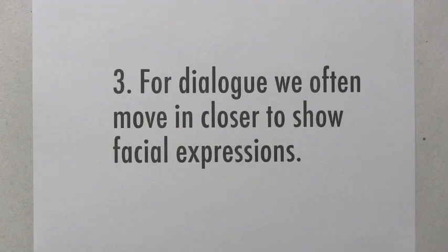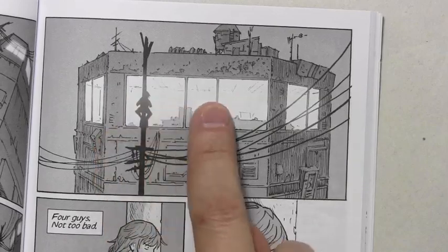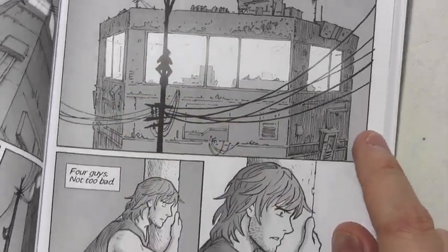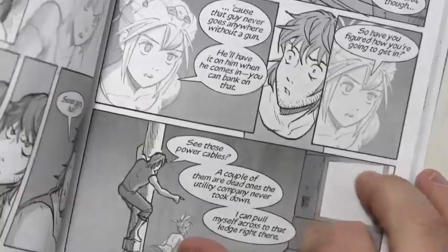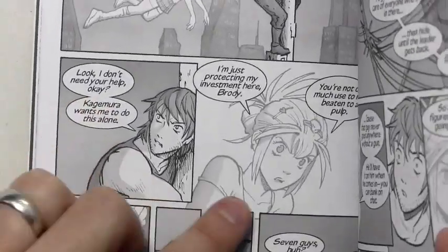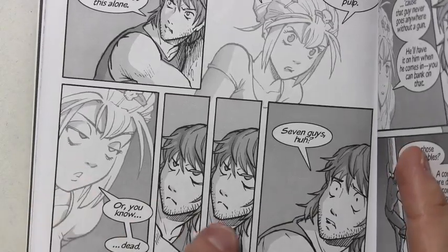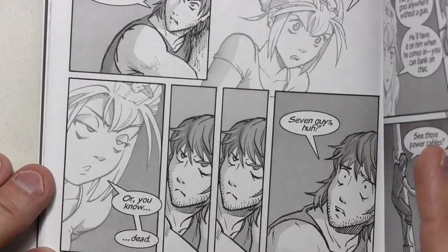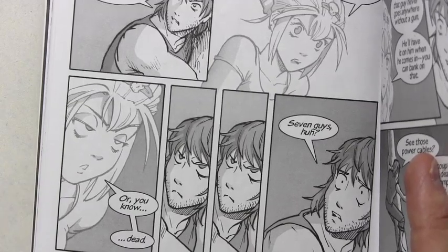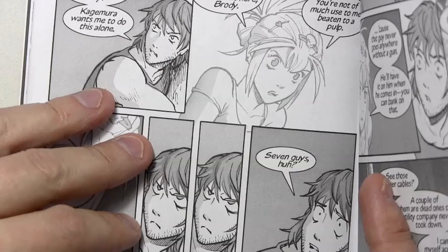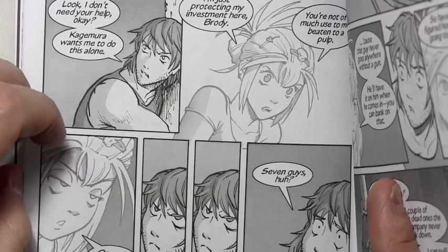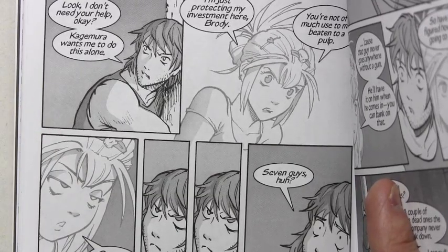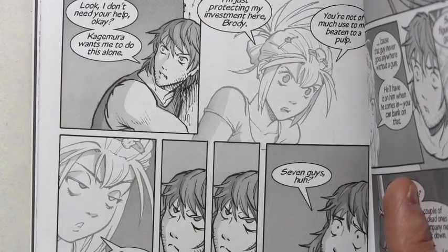Number three: for dialogue, we often move in closer to show facial expressions. Here Brody has climbed up a utility pole, peeking through a window. We begin to move in a little closer so we can see his facial expressions. As we get deep into the dialogue, it is primarily close-up scenes, fairly tight in, so that we can see the facial expressions and the changes that occur throughout the conversation. I wouldn't say this is necessarily a law, but it's pretty unusual to do a dialogue scene without any close-ups. If you did an entire dialogue scene from a distance with no faces visible, I would regard that as experimental. It can be done, but it's pretty unconventional.